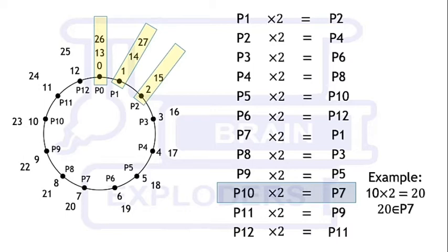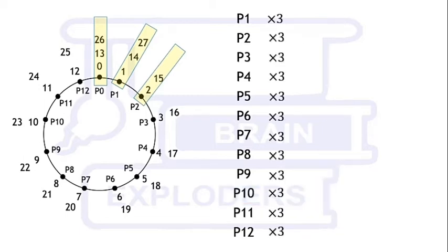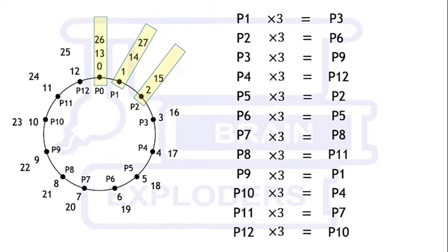A very helpful property is that twice of two different positions are always different. Not only for 2 but also for any other number which is not a multiple of 13, these properties hold, like thrice of P1 is P3, thrice of P2 is P6, and so on.